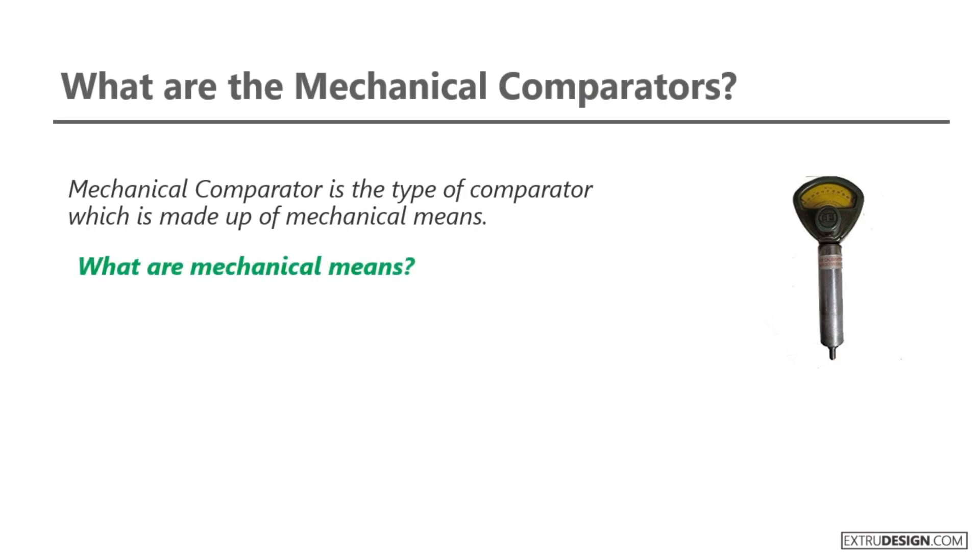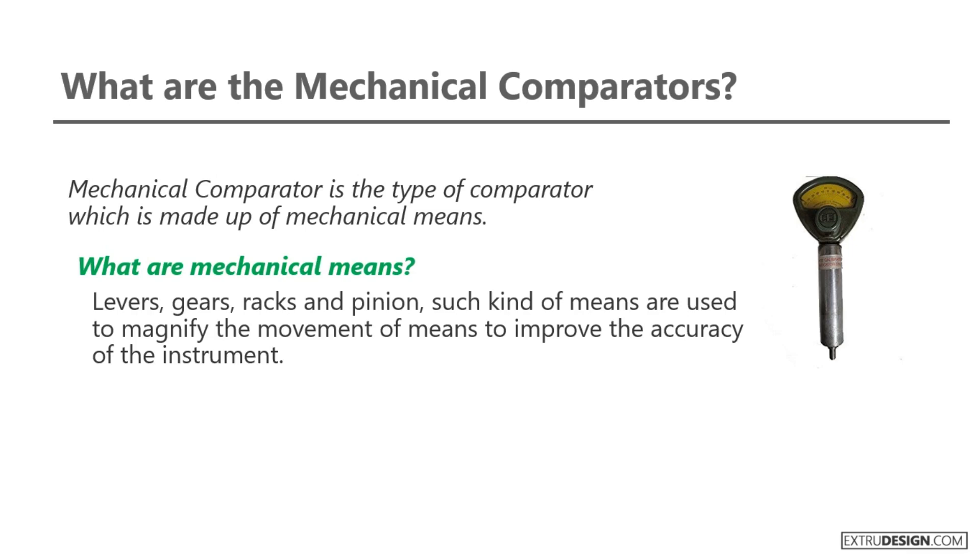What are mechanical means? Well, mechanical means are levers, gears, racks and pinion. Such kinds of means are used to magnify the movement of means to improve the accuracy of the instrument.